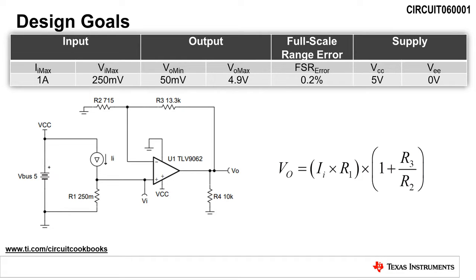The first design goal for this circuit is to convert a maximum input current of 1 amp to a maximum output voltage of 4.9 volts.